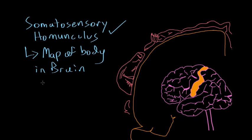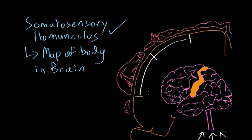The sensory homunculus basically maps out the body in the brain. As information comes to the brain from different parts of the body, information from the hand synapses in this region of the cortex, information from the face synapses in this region, and information from the feet synapses in this region. What this effectively creates is a topological map of the entire body in this strip of cortex, and this topological representation is what's known as the somatosensory homunculus.